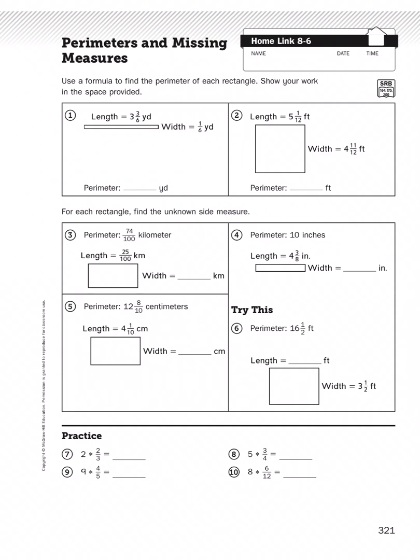Well hello again boys and girls, it's Mr. Wassmann. Today we're going to be looking at the perimeter of rectangles, but this time our perimeters involve measurements that use fractions and mixed numbers. We are in our homelinks unit 8 lesson 6, so let's take a look.